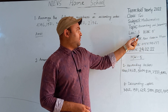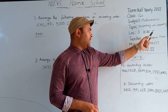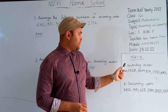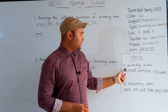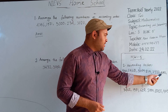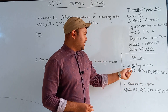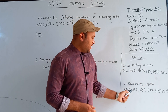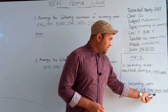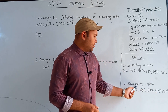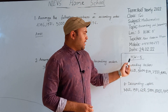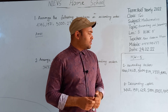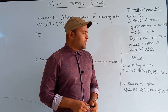Today's lecture number is 5, and the table number is 5. Question number 1: arrange the given numbers in ascending order. Question number 2: arrange the given numbers in descending order. You have to submit table number 5 on Saturday at your school campus.